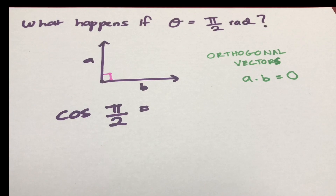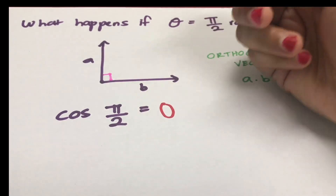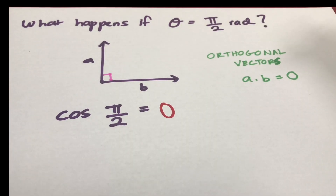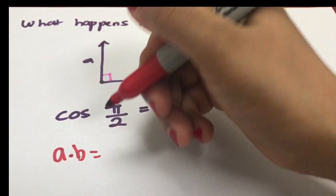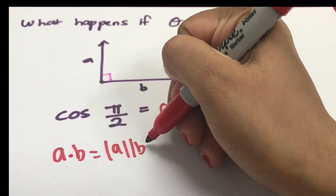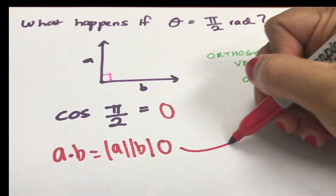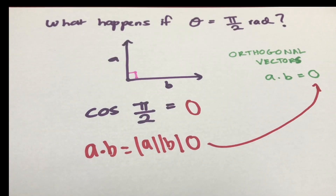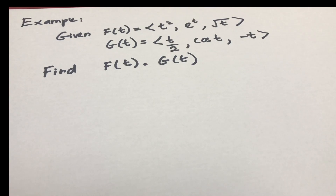What happens when θ is π over 2 radians? Cos(π/2) is 0, so we have a dot b equals the magnitude of a multiplied by the magnitude of b multiplied by 0. We can conclude that when the dot product of two vectors is 0, these vectors are orthogonal or perpendicular. Let's try out this example.